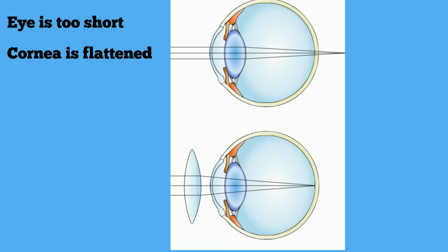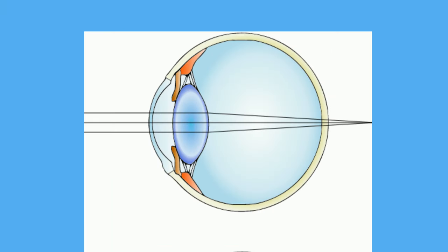The lens of the eyes bends the light from nearby objects so that the image does not focus properly on the retina, but instead is focused beyond the retina. If light could pass through the retina, the image would come into focus at a point behind the retina.